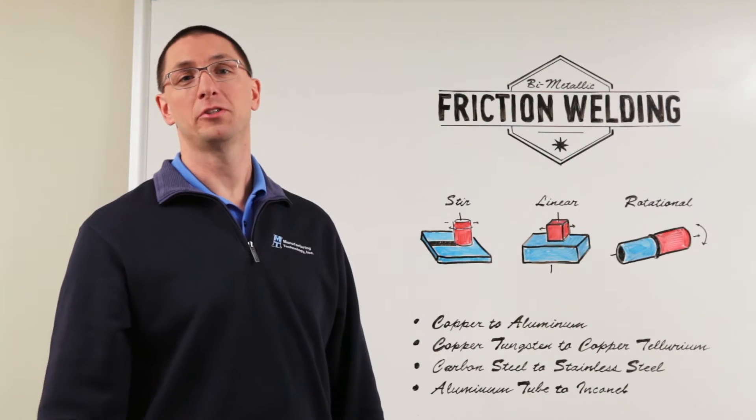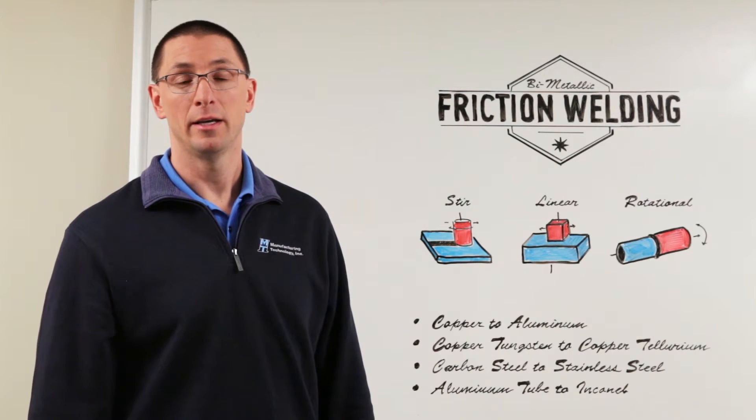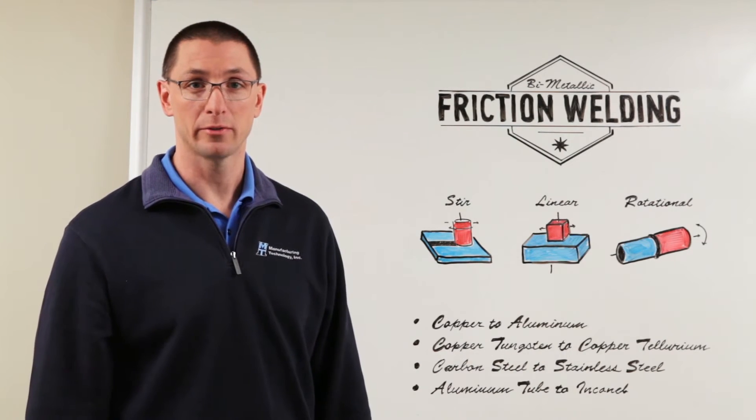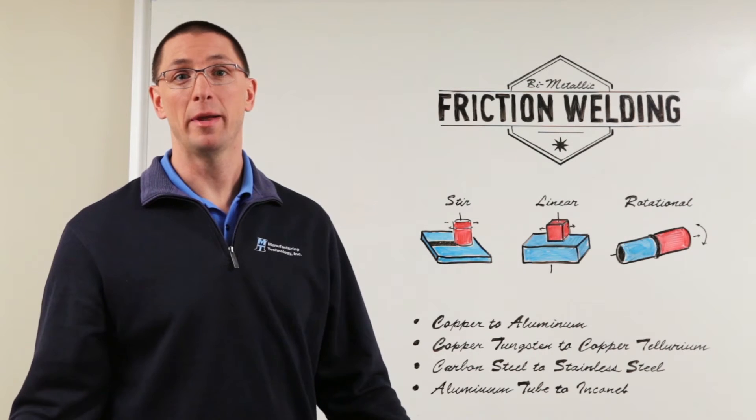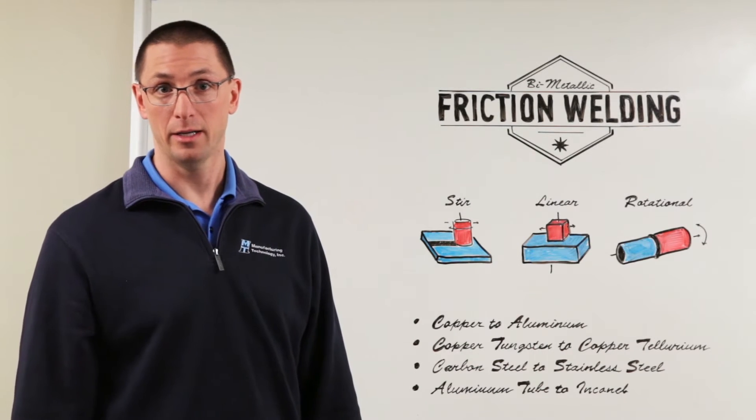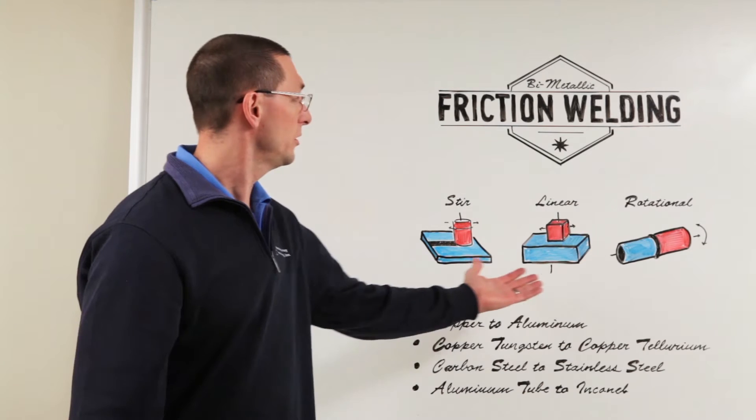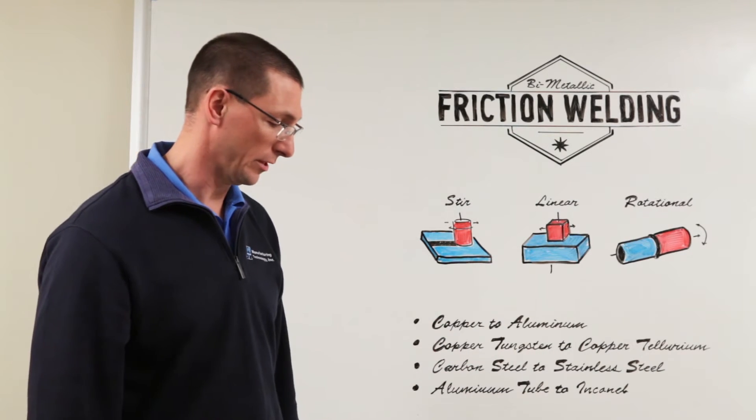One of the key differentiators between friction welding and other welding techniques is the ability to join dissimilar metals. Two different materials that may not be able to be joined by other techniques. Typically we can use any friction welding technologies to accomplish this.